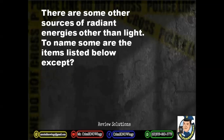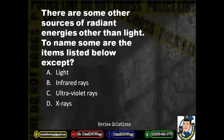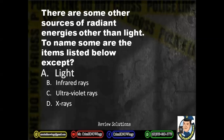There are some other sources of radiant energies other than light. To name some are the items listed below except: A. Light. B. Infrared rays. C. Ultraviolet rays. D. X-rays. The answer is light — because it is redundant, as the question asks for other sources of radiant energy besides light. Infrared rays, ultraviolet rays, and X-rays are all sources of radiant energy that can be used as mediums to produce images.